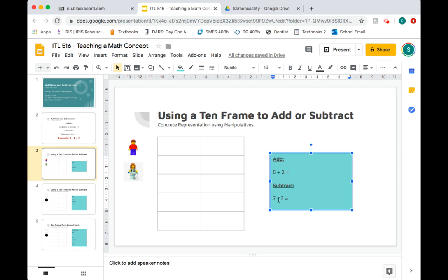So here we see our symbols. We know that this first one is going to be addition, the second one is going to be subtraction. To begin, we want to add the value of five plus two.